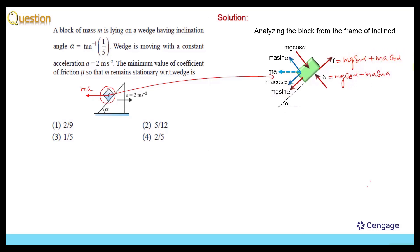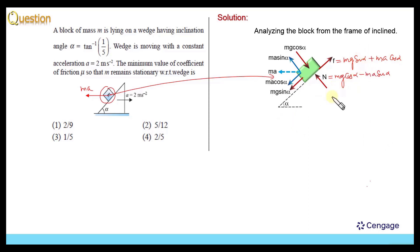Now we can take m as common. So here we can write: f = m(G sin α + A cos α). This is the value of the friction force.